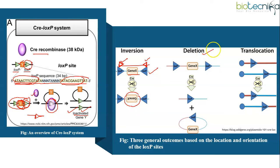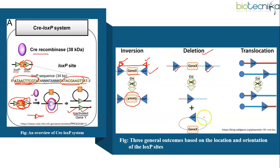Deletion occurs when the sites face in the same direction. In this case, the sequence between the LOX-P sites is excised as a circular piece of DNA and will not be maintained.